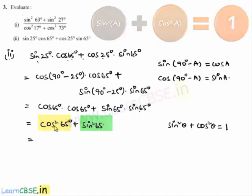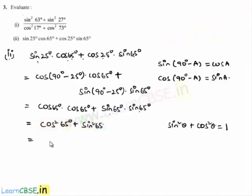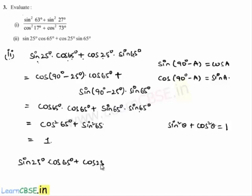Therefore, sin 25° × cos 65° + cos 25° × sin 65° is equal to 1.